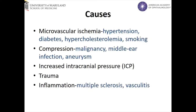Due to its long path along the subarachnoid space, the 6th nerve is particularly susceptible to damage due to traction forces of trauma and elevated intracranial pressure along this space. In addition, inflammation in the region of the nerve, as may be caused by multiple sclerosis or vasculitis, can also lead to a 6th nerve palsy.